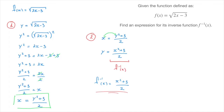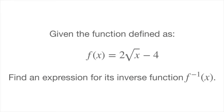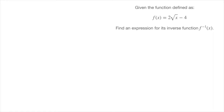Let's look at one last example. We're given a function defined as f of x equals 2 times the square root of x minus 4, and we need to find an expression for its inverse function. I'll copy the function at the top of the page: f of x equals 2 times the square root of x minus 4. To find the inverse function, we follow the same two-step method. Step 1: we start from y equals 2 times the square root of x minus 4 and rearrange to make x the subject.